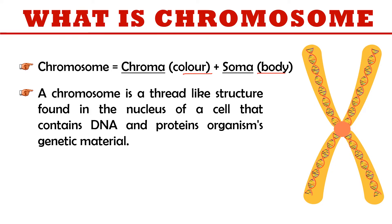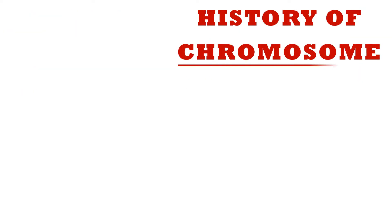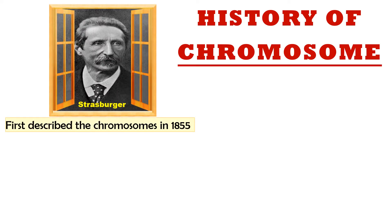These thread-like structures contain DNA and protein that carry part or all of the organism's genetic material. In simple words, chromosomes are thread-like structures found in the nucleus that contain the genetic material of the organism.